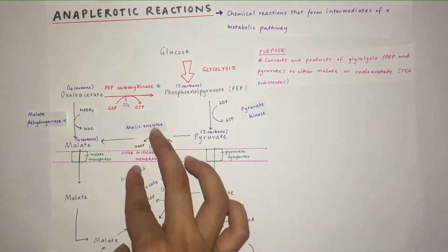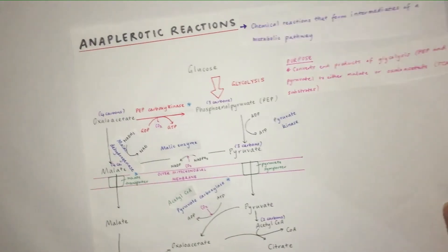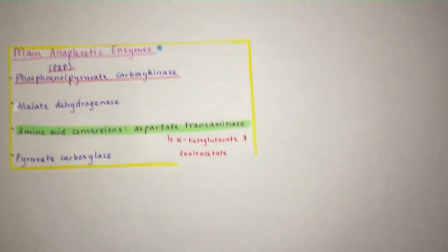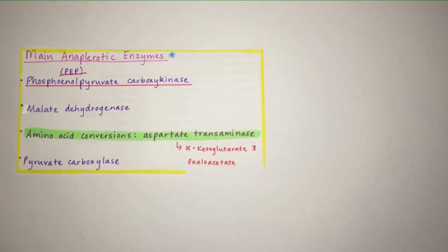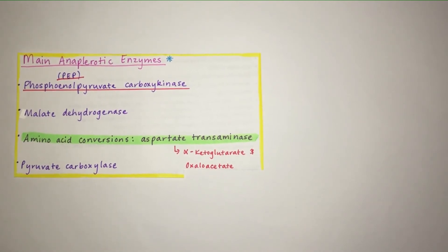This is promoted by acetyl-CoA. So that's the anaplerotic reactions that you need to know. Now let's move on to just going over again the main anaplerotic enzymes and just adding one more. We've got phosphoenol pyruvate carboxykinase, malate dehydrogenase, and then I've added one in this list.